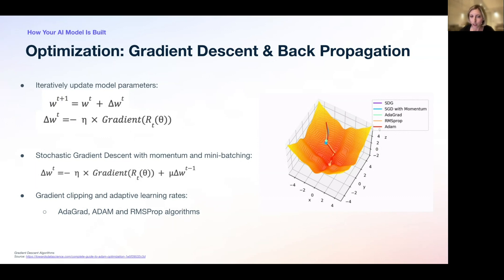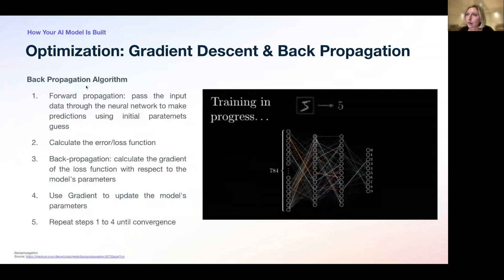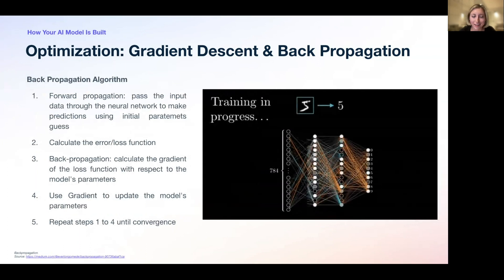One of the most difficult choices is how to set the learning rate for stochastic gradient descent. We may want different learning rates for each parameter, updated throughout training. Modern algorithms address this: AdaGrad, Adam, and RMSProp all implement adaptive learning rates. Each has its pros and cons and is slightly different, and the choice depends on your particular problem.